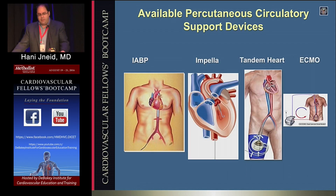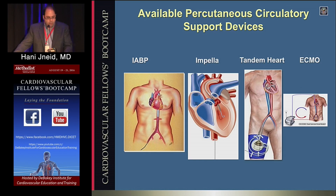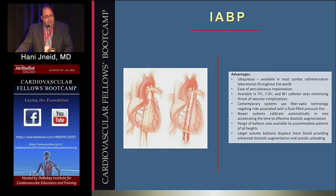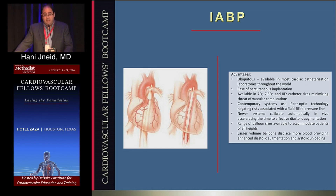Briefly, regarding percutaneous circulatory assist devices — we are hoping in six months to release guidelines on cardiogenic shock. There are four types of circulatory assist devices. The balloon pump used to be very commonly used in cardiogenic shock, but the SHOCK 2 trial at 30 days showed no impact on mortality in ST elevation MI patients revascularized with primary PCI. We still use it in mild shock, refractory ischemia, unstable non-ST elevation ACS, and very high-risk PCI.